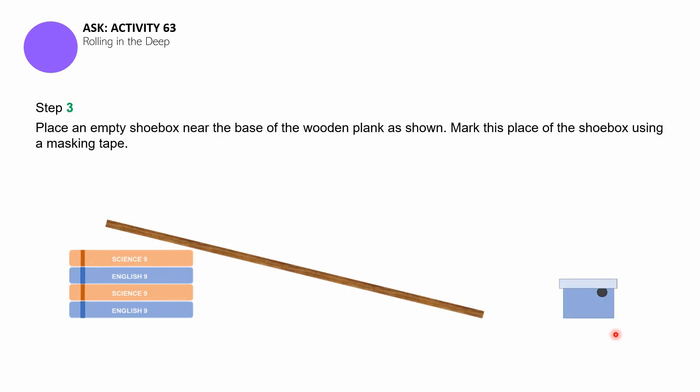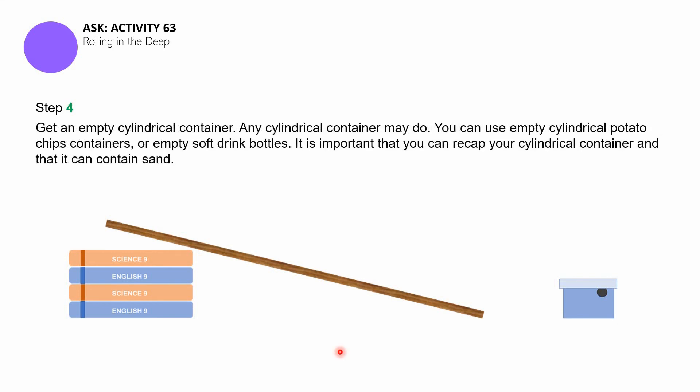Step number three, you have to put an empty shoe box near the base of the wooden plank as shown. Mark this place of the shoe box using a masking tape. So mark it right here so that serves as the original position of the shoe box. Step number four, get an empty cylindrical container. Any cylindrical container may actually do. You can use empty cylindrical potato chips containers or soft drink bottles. It is very important that you can recap your cylindrical container because later you'll fill it with sand.